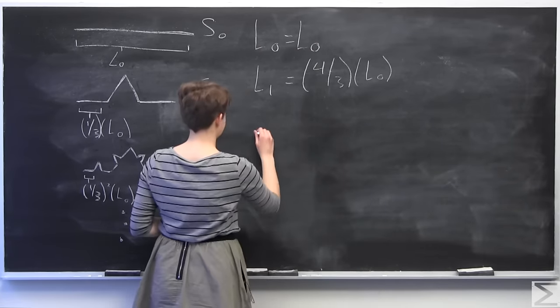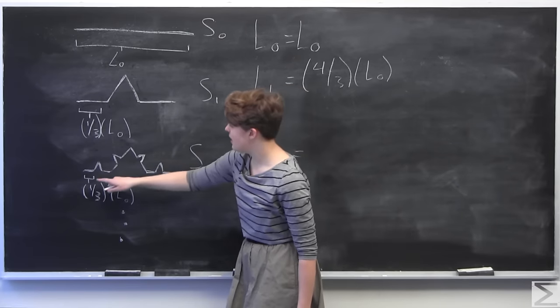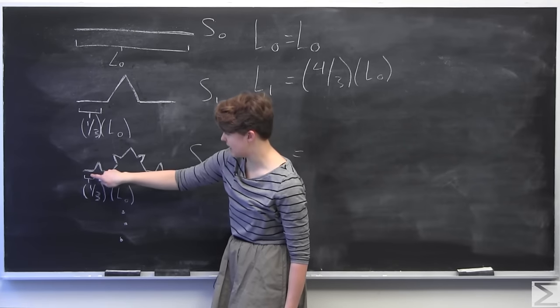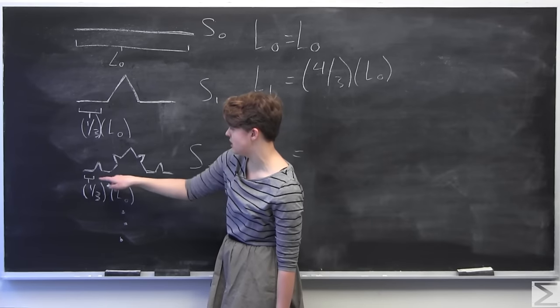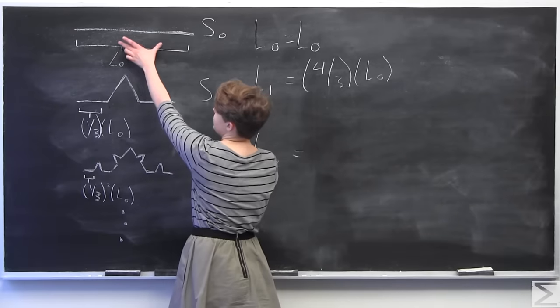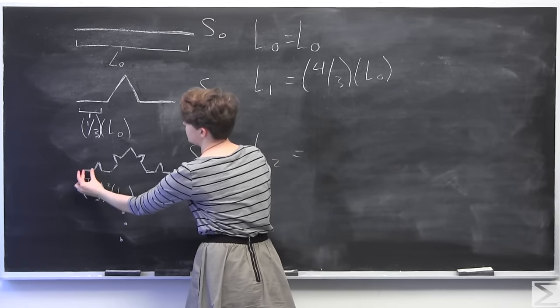And then to find the length of L2, we look down here and we see that one of these lines, one of these small lines has a length of one third squared times L0, because it's one third of one third of L0. See how this was L0, one third L0, one third times one third L0.